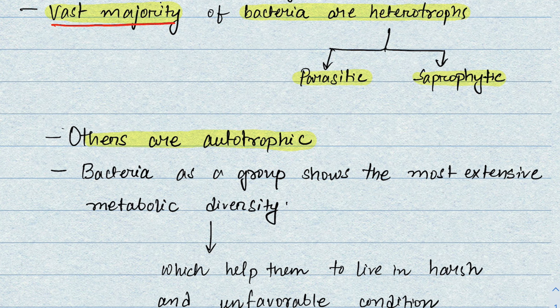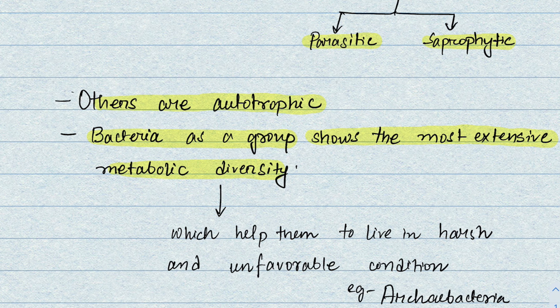A very important line from NCERT: bacteria as a group show the most extensive metabolic diversity. Metabolism refers to the chemical reactions taking place inside a cell — both anabolic (formation of products) and catabolic (breaking down). Bacteria show the most extensive diversity in these various types of metabolism.